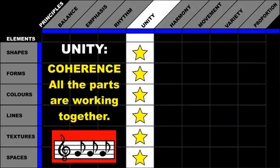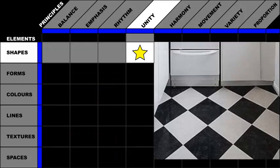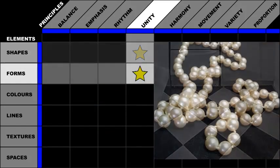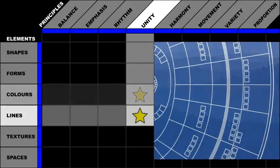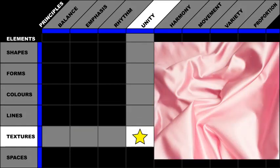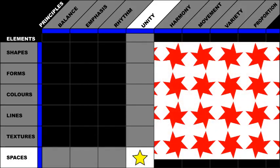Let's focus on the principle of unity. We can have unity with shapes, unity with forms, unity with colors, unity with lines, unity with textures, and unity with spaces.